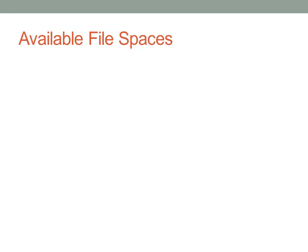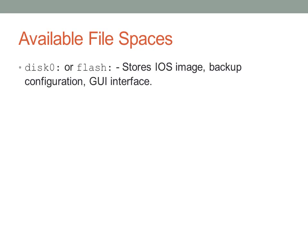Now we'll look at the available file systems in IOS. The first is the onboard flash card, normally referred to as 'flash:' and in newer operating systems as 'disk0:' — these two are interchangeable. This is typically where the IOS image (the operating system itself) is stored before being loaded into RAM. You can also store backup configurations there. In switches, this is where the startup configuration is stored. If the device has a GUI, that GUI will also be stored on the flash card.